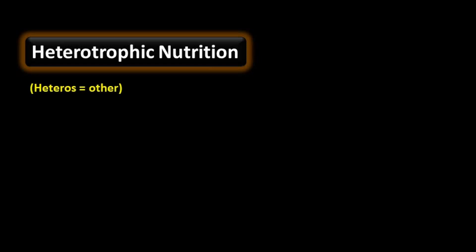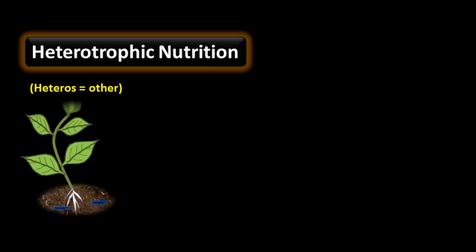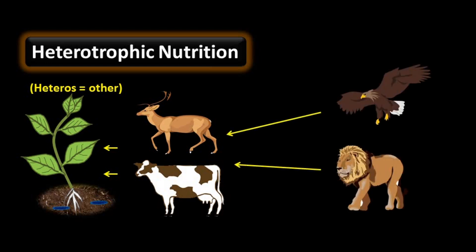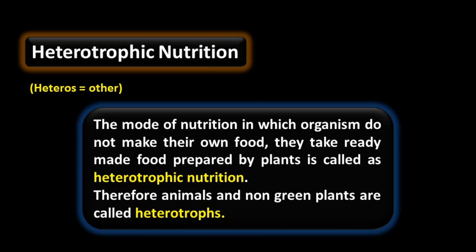Heterotrophic nutrition — 'heteros' means others, meaning organisms depend upon other organisms to obtain their food. This plant is autotrophic and makes its own food, but herbivores depend upon plants for food, and carnivores depend upon herbivores. This is a food chain, but the main source of food is the plant. This food is directly or indirectly utilized by animals. So animals are known as heterotrophs — the mode of nutrition in which organisms do not make their own food, but take ready-made food prepared by plants, is called heterotrophic nutrition.